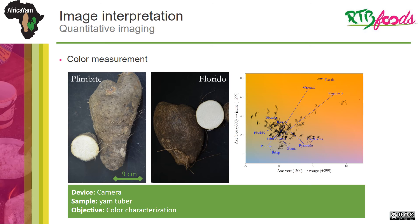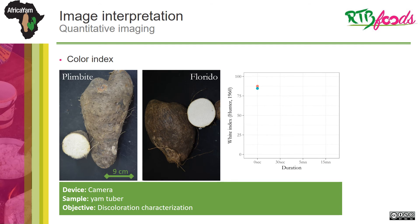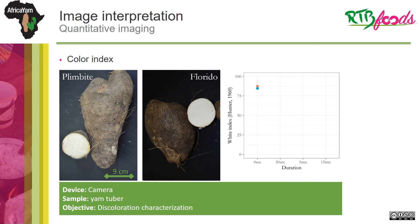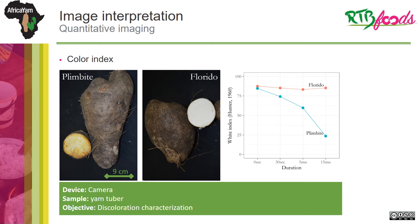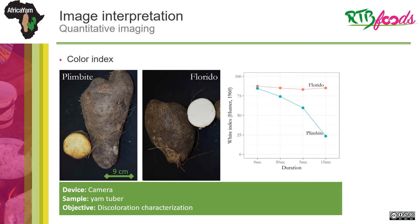Here, image analysis allowed to compare tuber color of different yam genotypes. From the color values, it is possible to derive indices that will summarize the useful information of the image. For instance, looking at the evolution of a whiteness index for yam allowed to quantify discoloration and oxidation of the tuber surface over time.